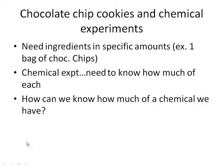Okay, so we're here in Chapter 6, and let's start by talking about chocolate chip cookies. Because sometimes when we're talking about things in chemistry, it's good to have something that you might have experience with that you can apply. So if you've ever made chocolate chip cookies, or really if you've ever cooked anything, you know that you need ingredients in specific amounts. For example, to make one batch of chocolate chip cookies, you need one bag of chocolate chips.